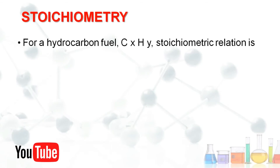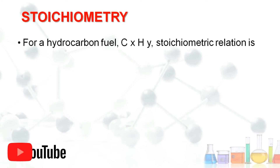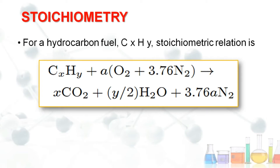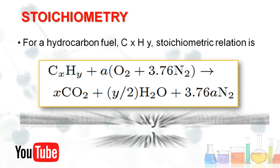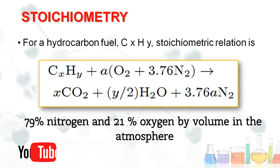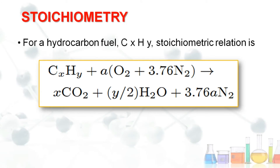We have taken a compound reaction C_x H_y. The general equation is: C_x H_y + A(O₂ + 3.76 N₂). The factor 3.76 is derived from atmospheric conditions — we have 79% nitrogen and 21% oxygen in the atmosphere.